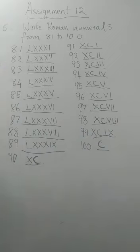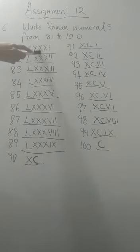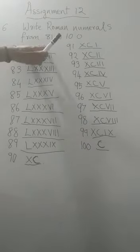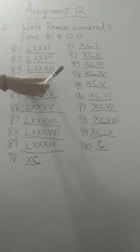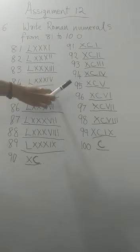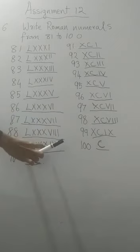So, now you have written the Roman numerals from 81 to 100. So, first 80 is what? 50 plus 10 plus 10 plus 10. This is 80. Then you add 1. 82, 83, 84, 85, 86, 87, 88, 89.